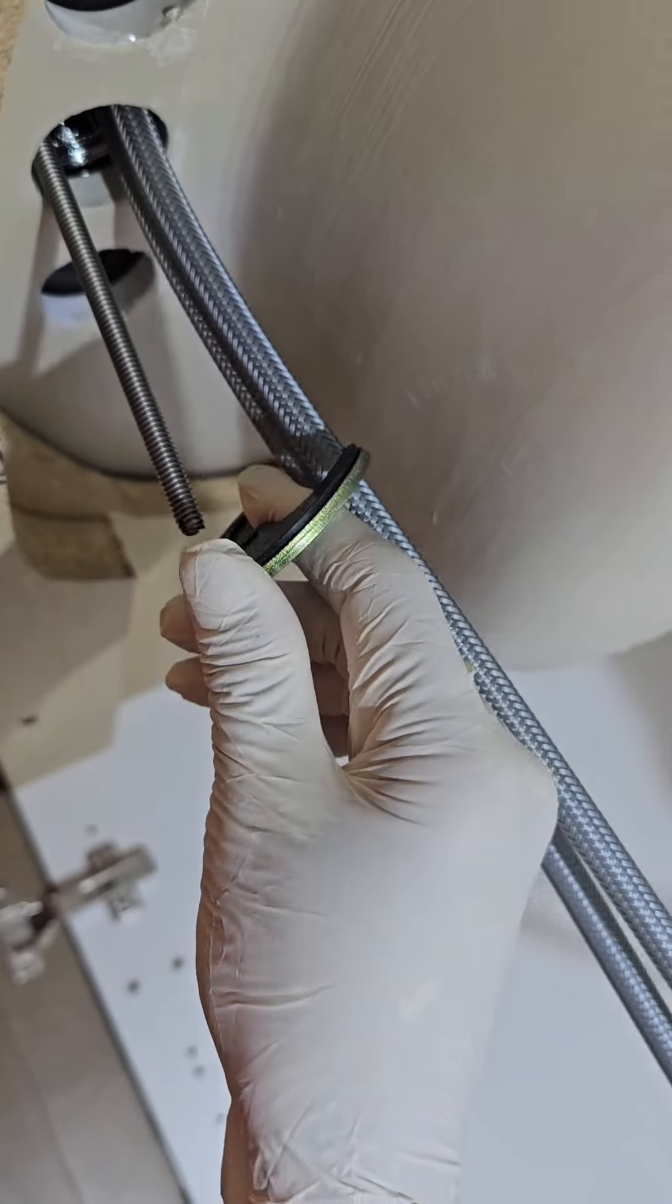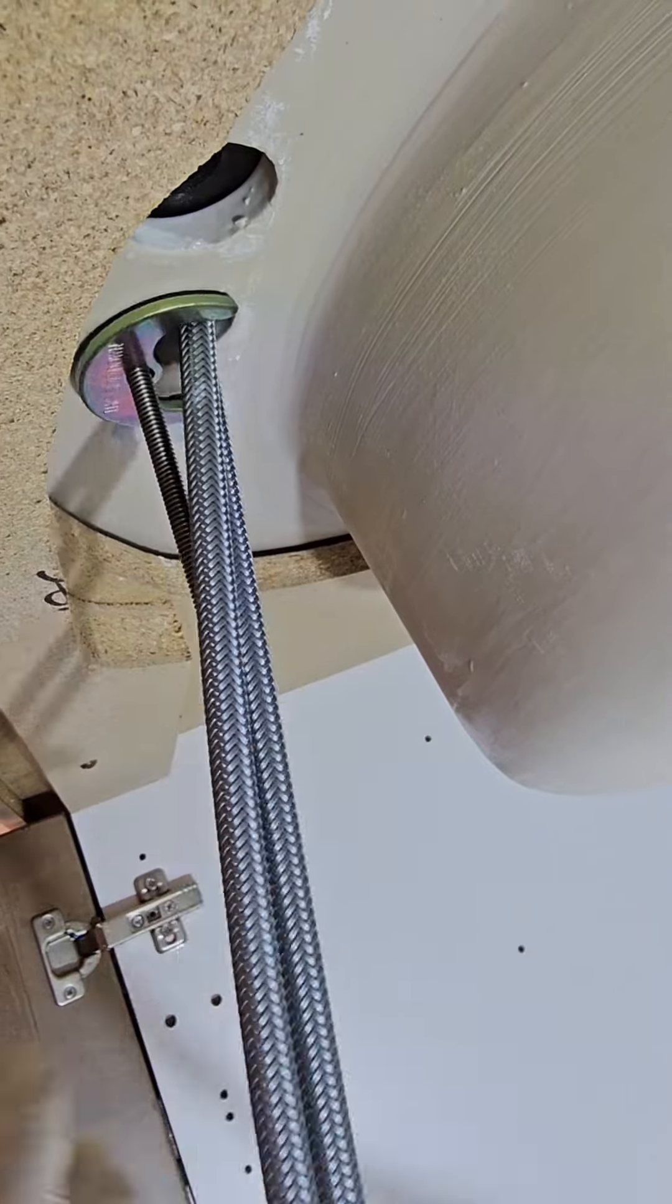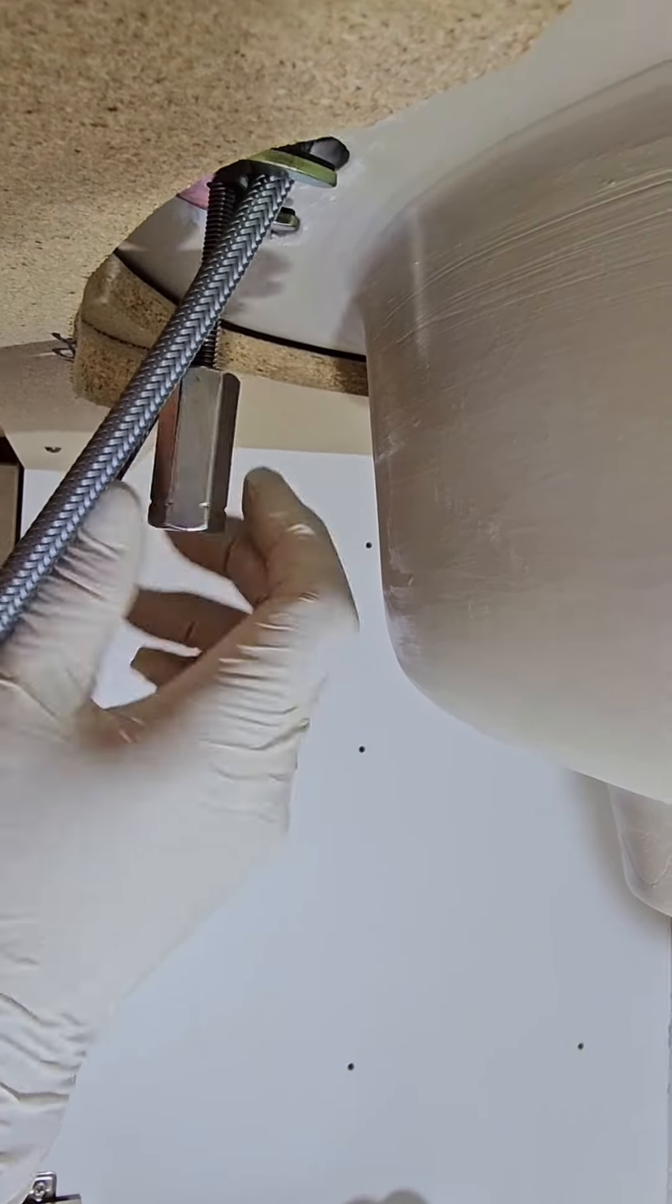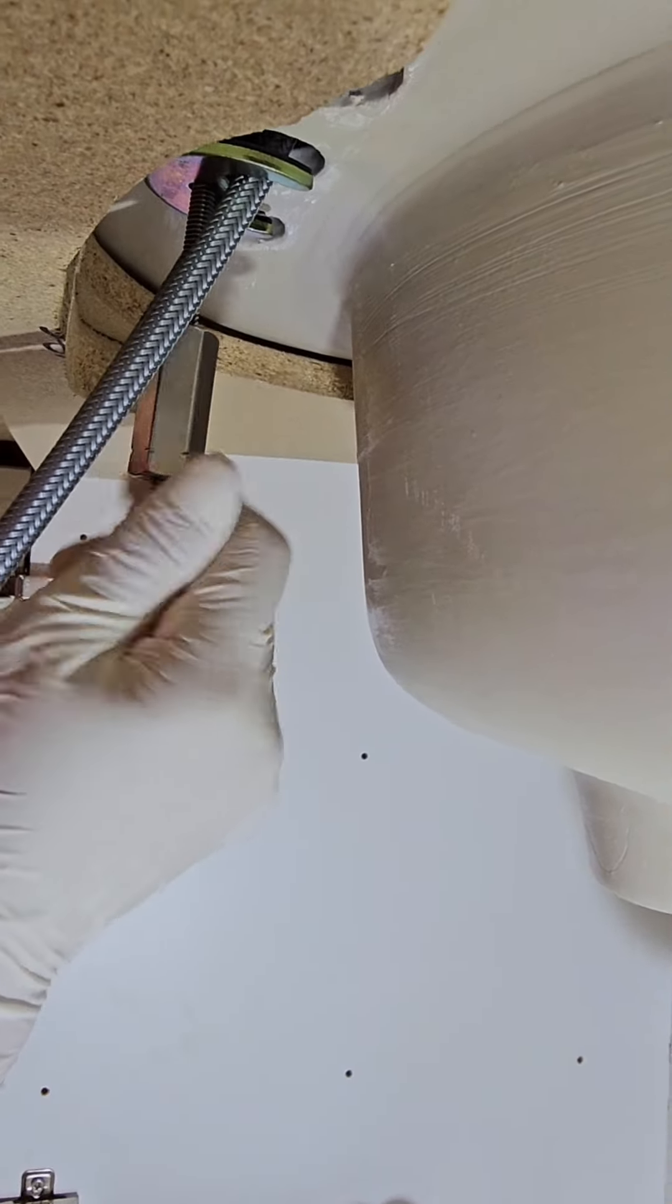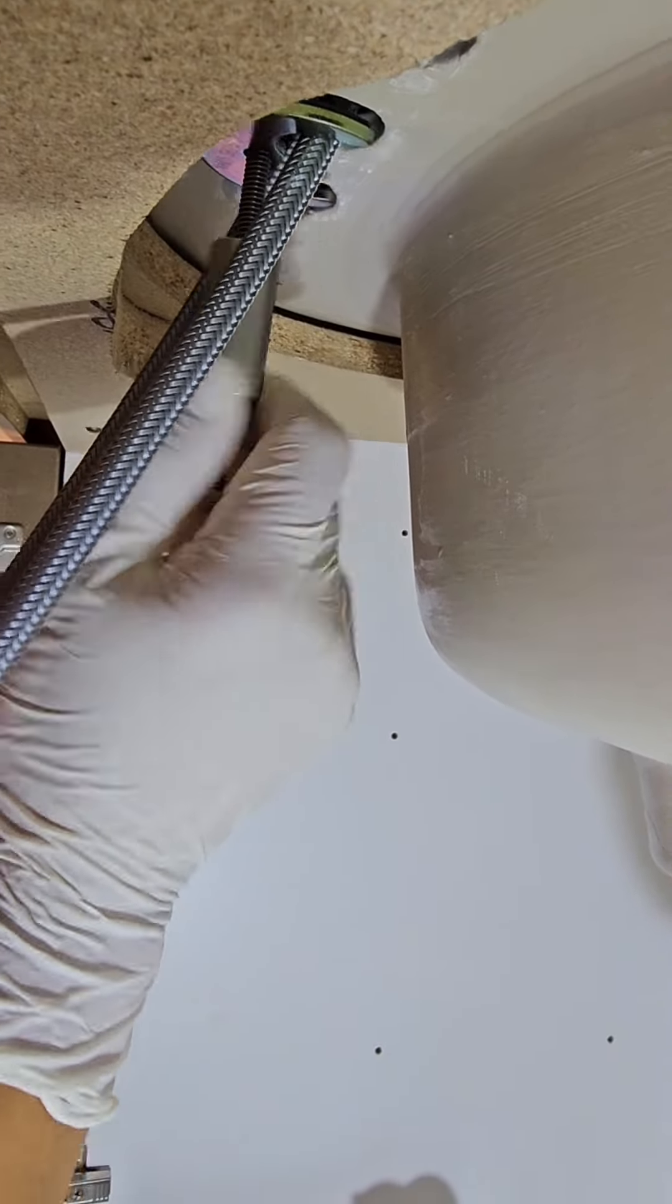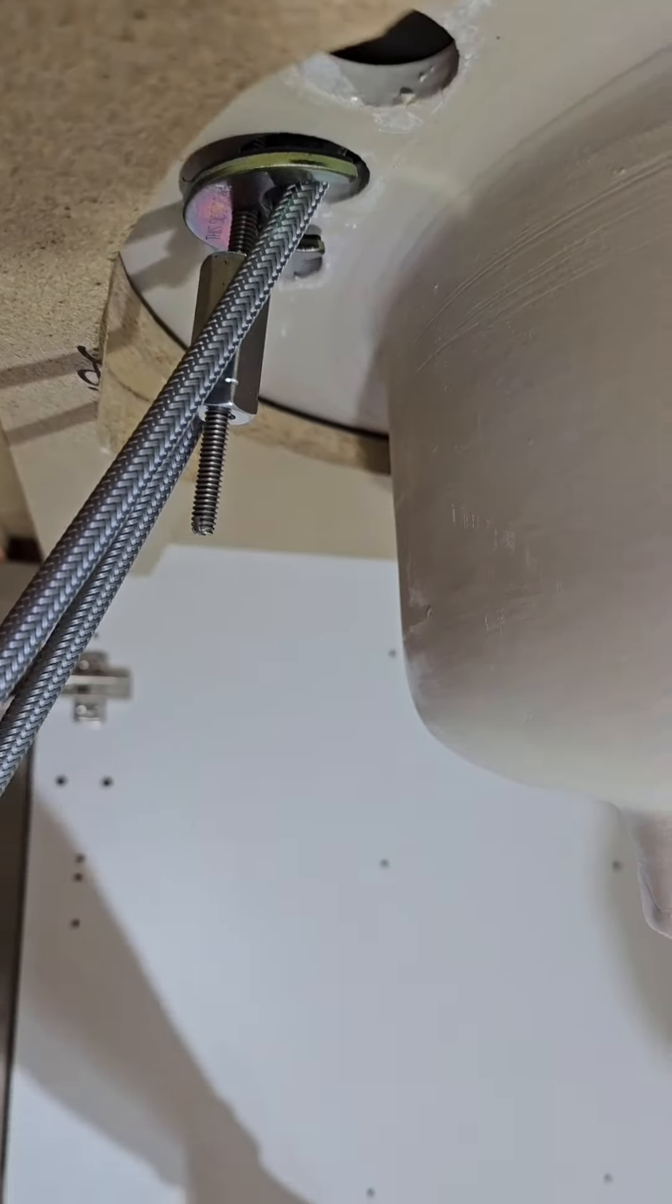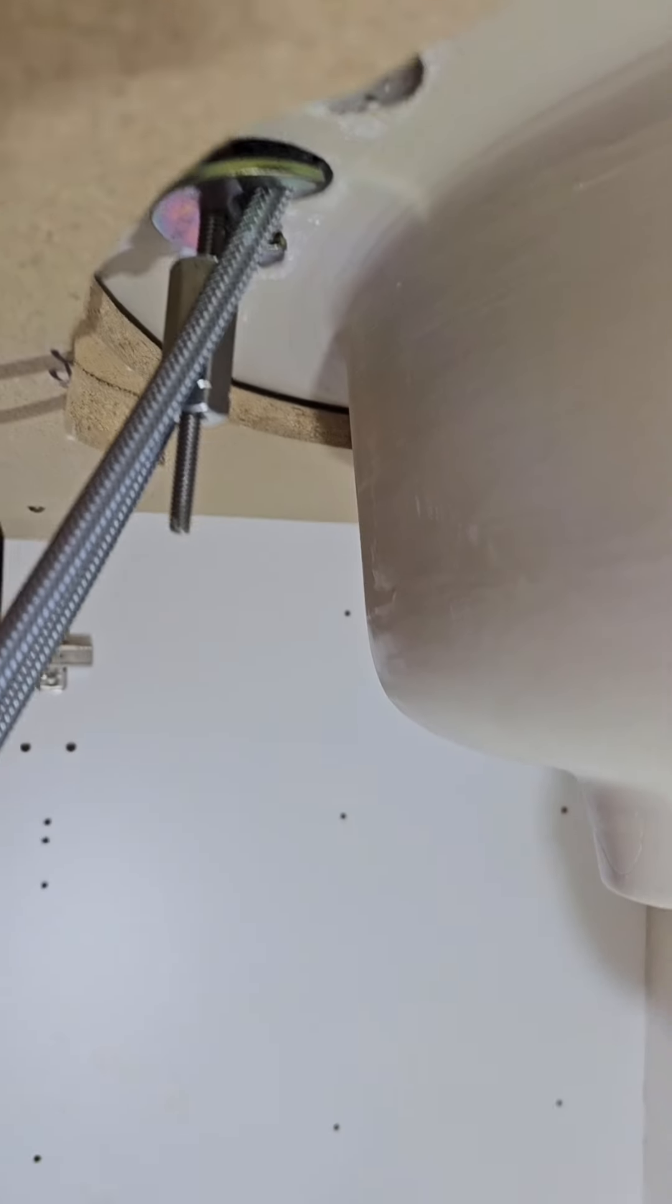Before tightening, ensure it's centered. Tighten the faucet knot until it's snug. If your hoses are not connected to the faucet, make sure to attach them before installation.